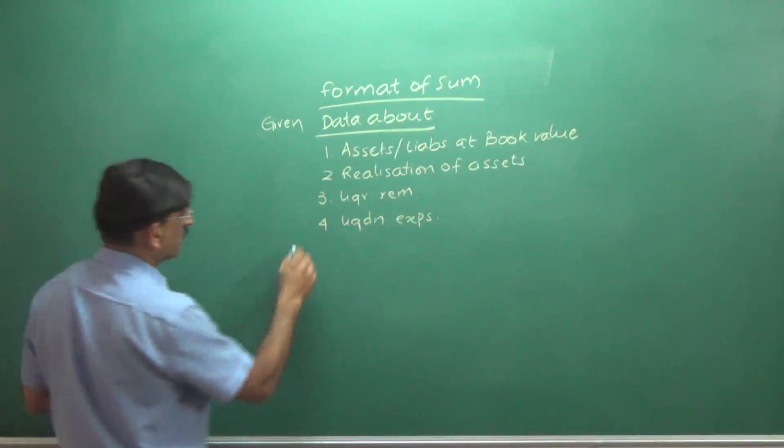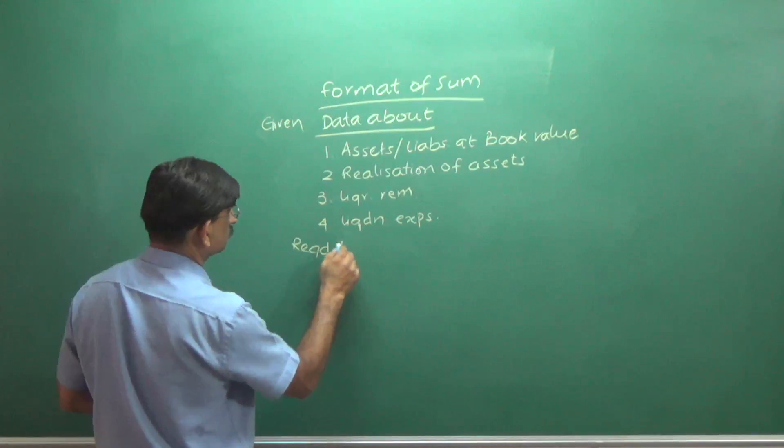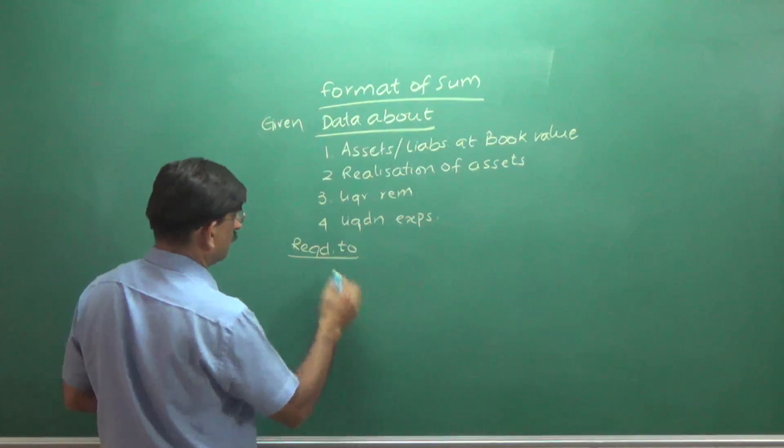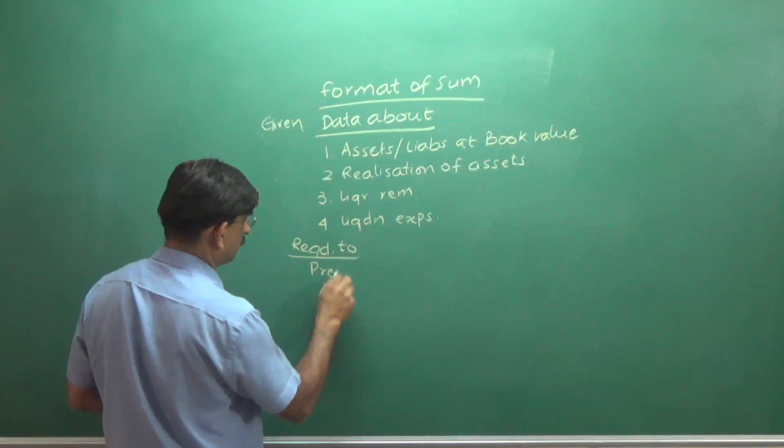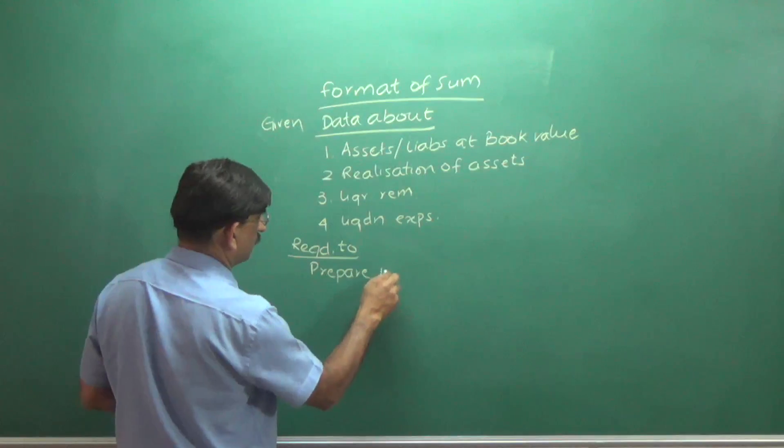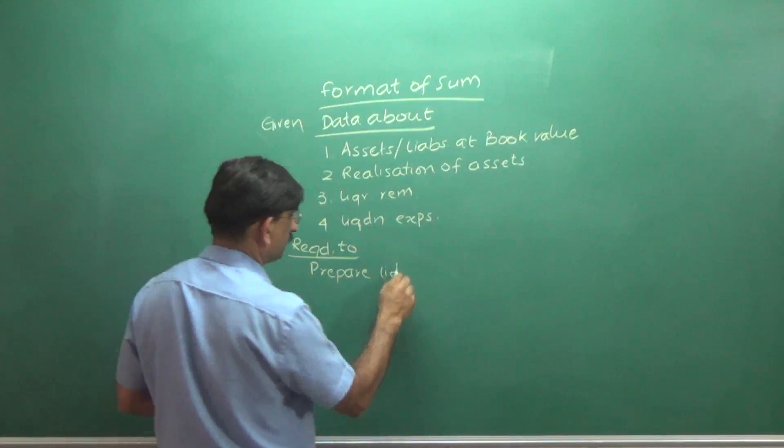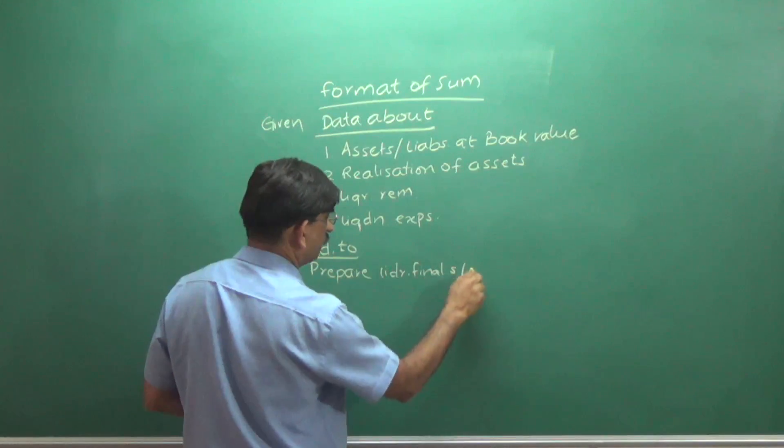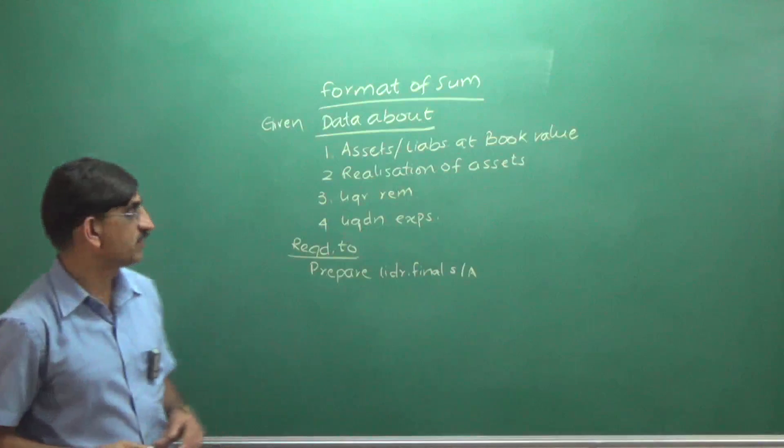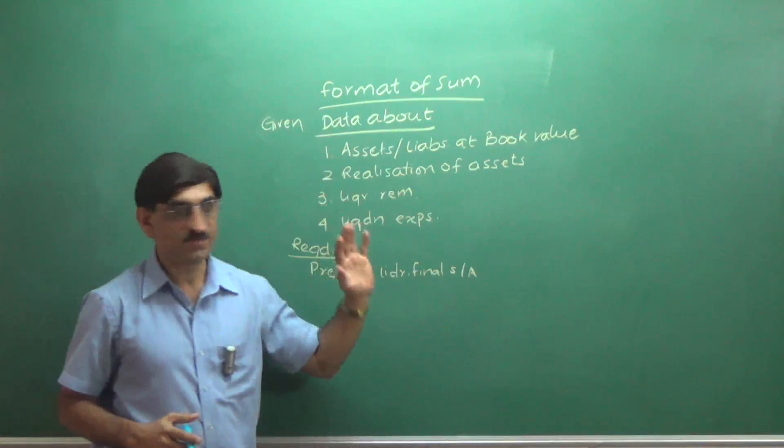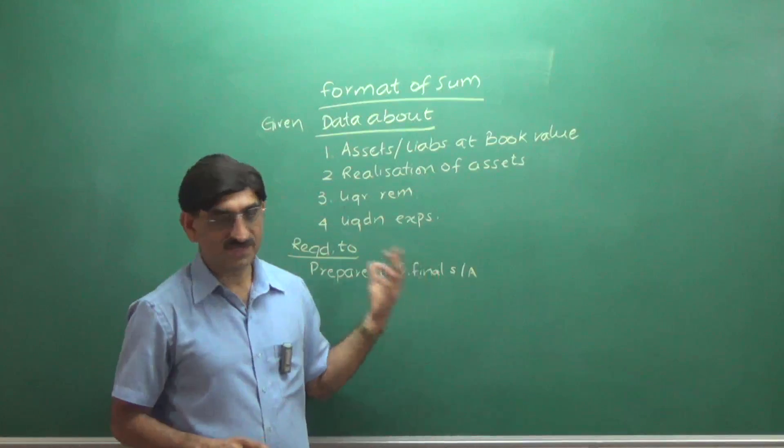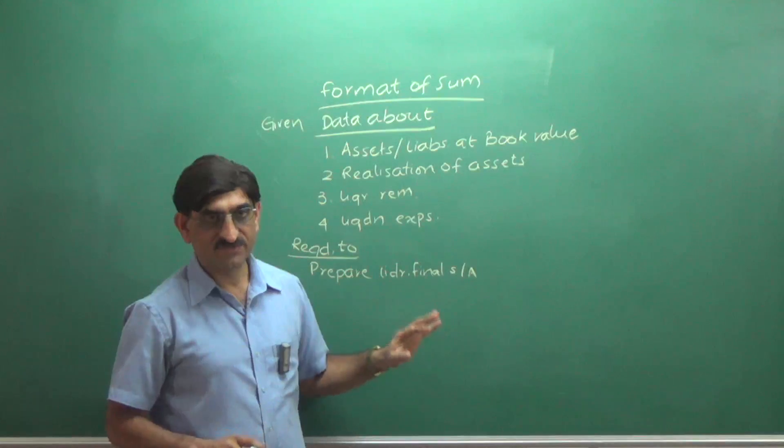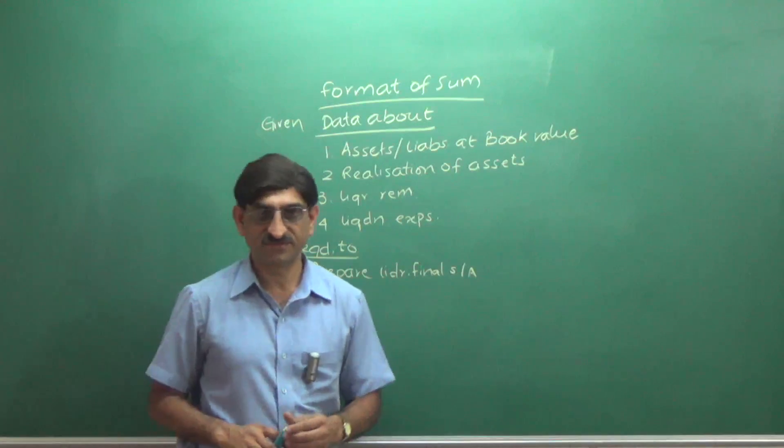and will be required to do prepare liquidators final statement of account. This is what we are required to do. This is the only type of sum, which we will have to get, and there is no other thing which we will have to do in this chapter. With this, the chapter will be over.